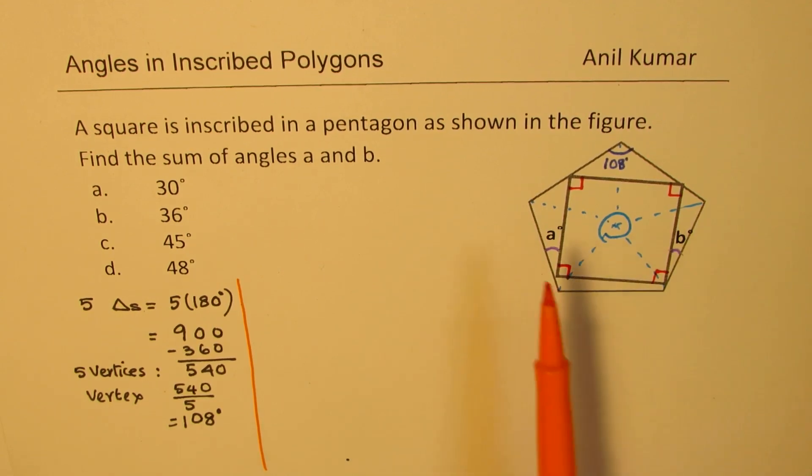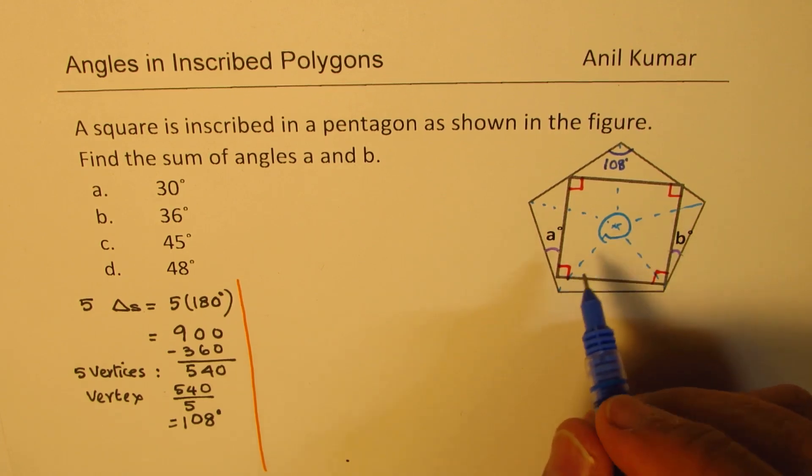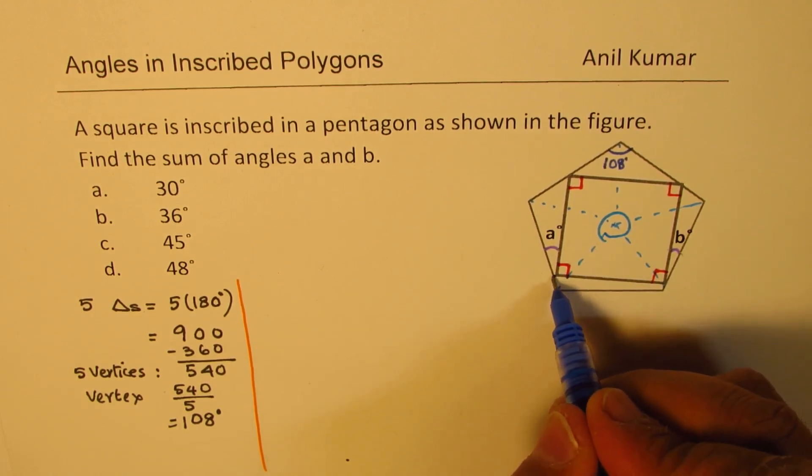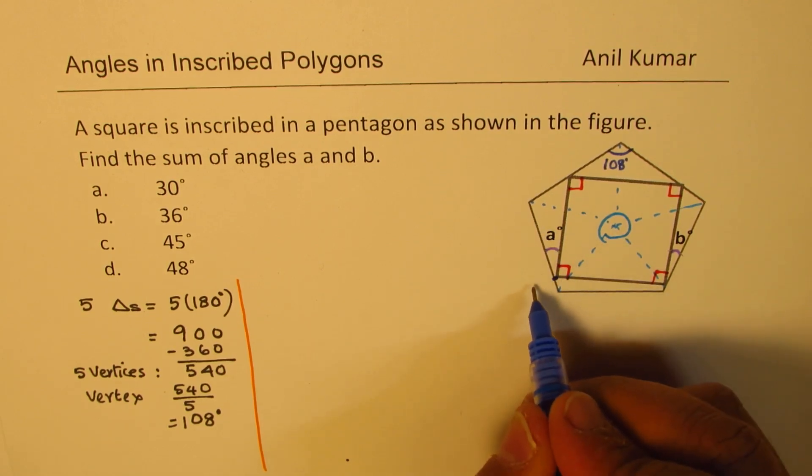Now given all this, you need to answer this question: what is the sum of angle A and B? To solve this, let's look into a point. Let's say this point of the square on the pentagon, let's call this point as A.